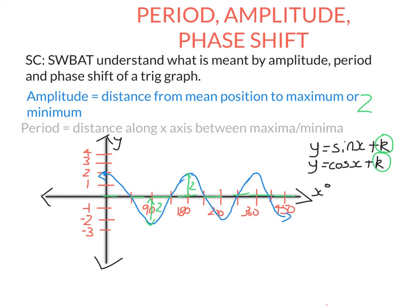So distance from middle to maximum or middle to minimum, and it's also half the distance from the minimum to the maximum. So that's what we mean by amplitude. We're just saying how high or low does the graph go.